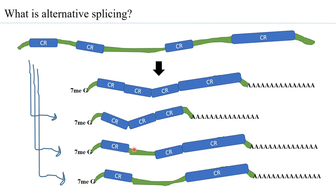Similarly, instead of an intron being spliced out, it can be retained, and another intron with an exon can be removed. So you may have exon 1, exon 3, exon 4, and intron 1 remaining — meaning one exon is skipped but one intron which needed to be spliced out has been retained, giving rise to another RNA variant. You can get n number of possibilities of different RNA variants depending on where the spliceosome machinery is able to bind and carry out splicing.